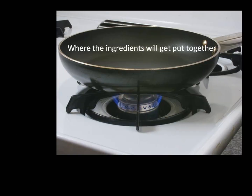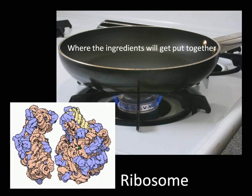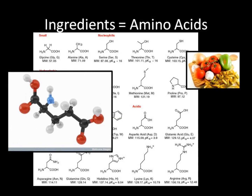Once a copy has been created, it is time to start cooking. For some recipes, we may use the stove and some pots and pans to build our meals. Within a cell, we have complex structures called ribosomes, which are the location for building the proteins. While a variety of ingredients are needed to follow a particular recipe, in order to create a protein, we use ingredients called amino acids. These are sometimes called the building blocks of proteins.